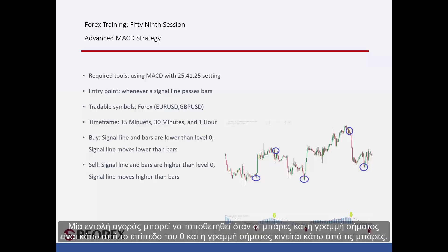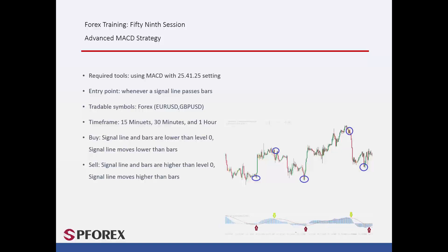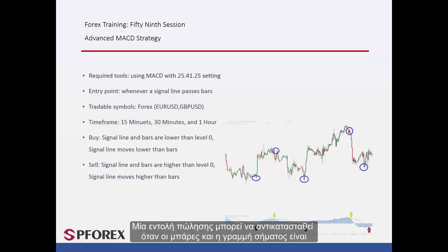A buy order can be placed when bars and signal lines are under level 0 and the signal line moves under the bars. A sell order can be placed when bars and signal line are above level 0 and the signal line moves higher than the bars.